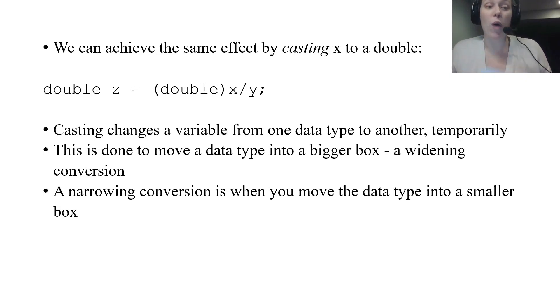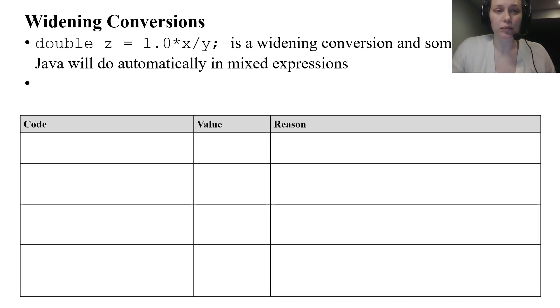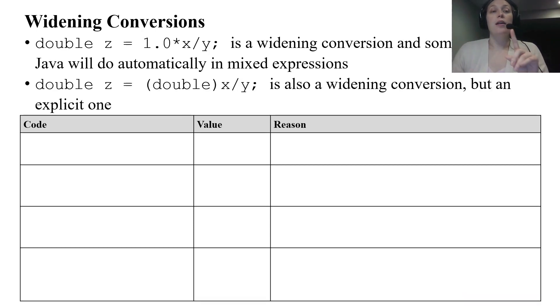So let's go over our widening conversions since that's what we've done with our expressions so far. So that expression the 1.0 times X divided by Y, that's a widening conversion and it's something Java automatically does in mixed expressions. So we've seen that the integers temporarily get promoted to doubles. The actually putting double in parentheses is also widening conversion, is also casting. We just call that an explicit one because you're explicitly doing that. That's your purpose.